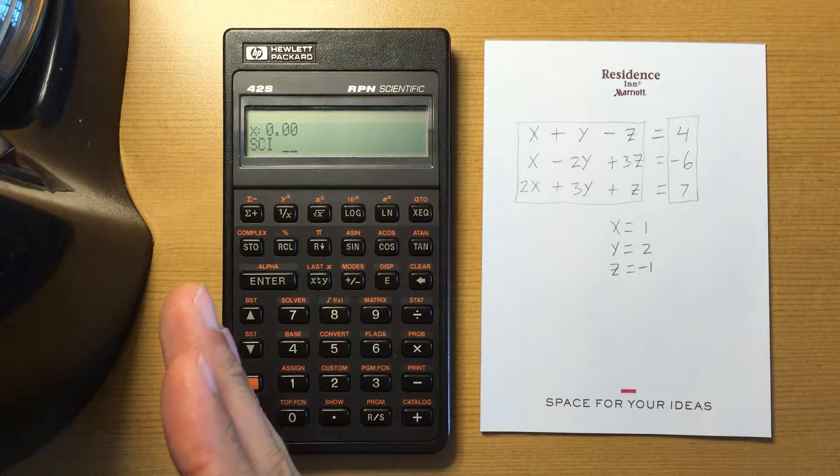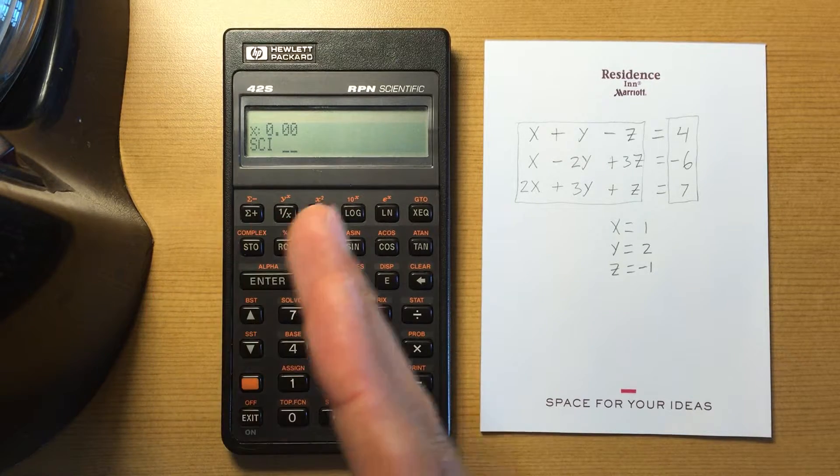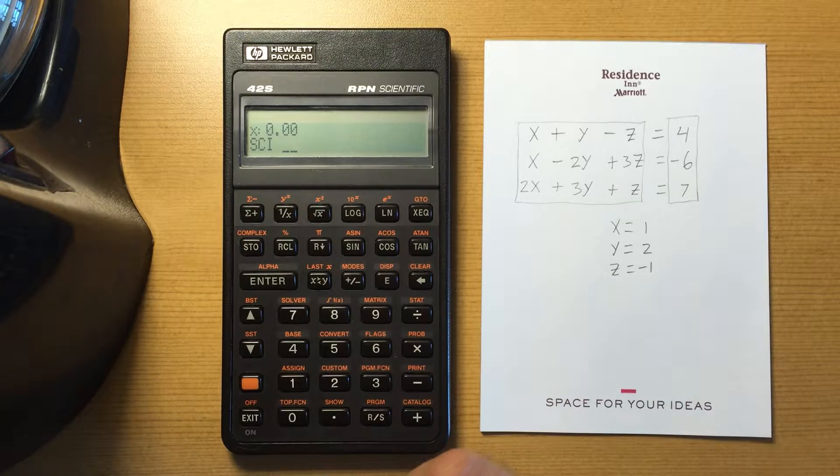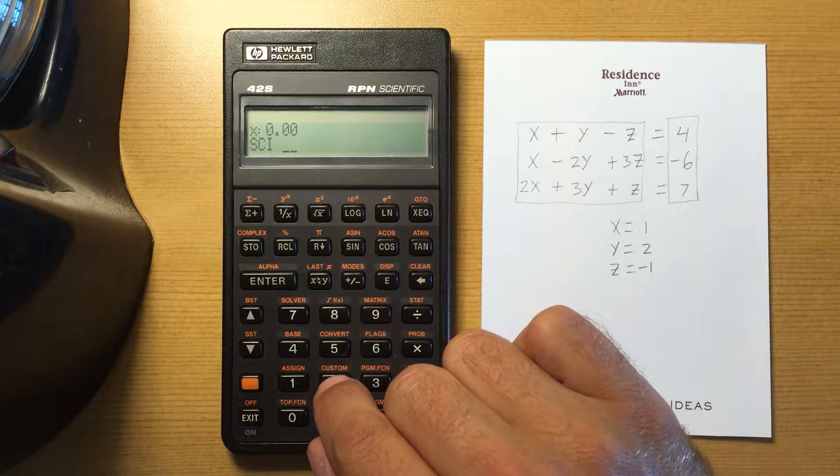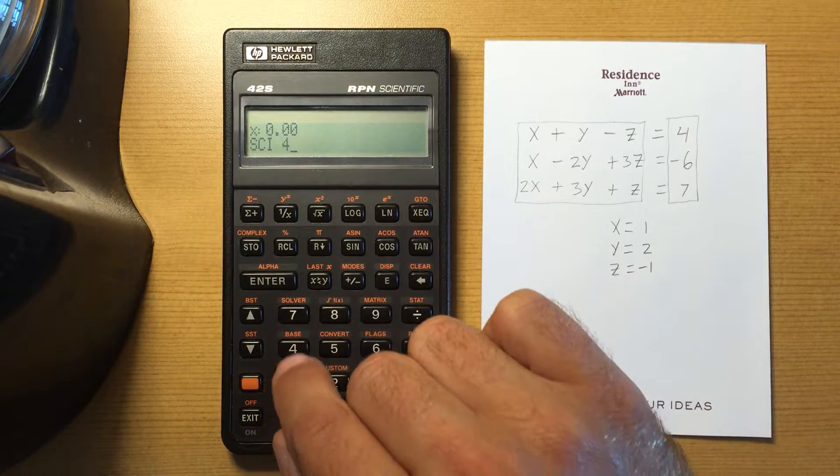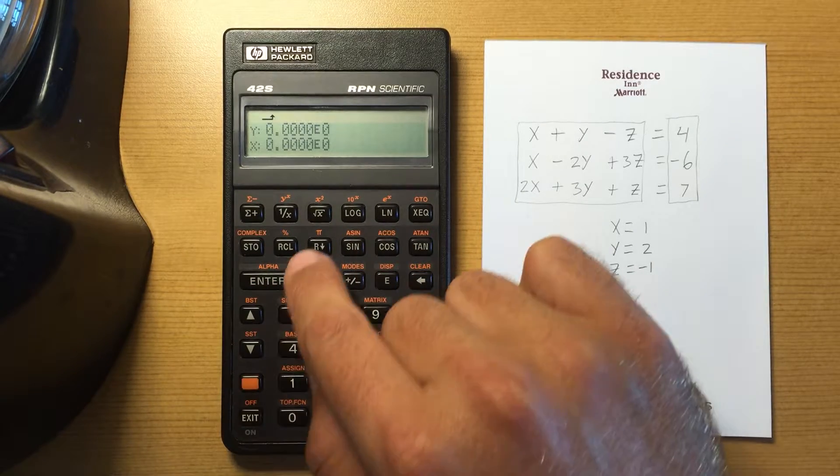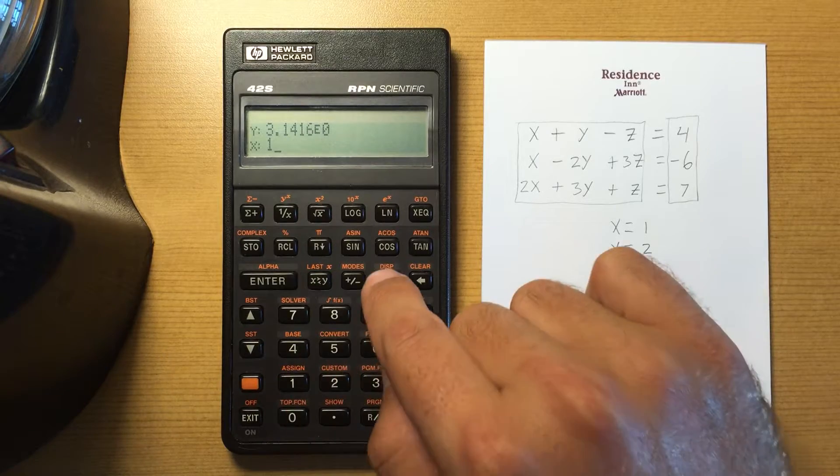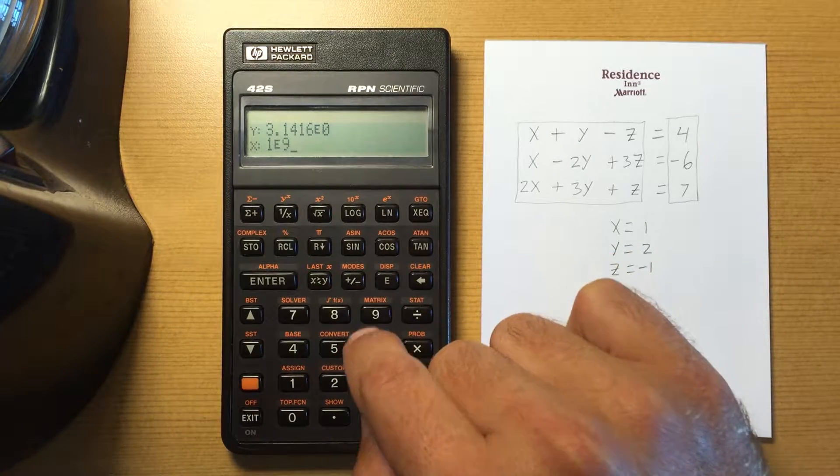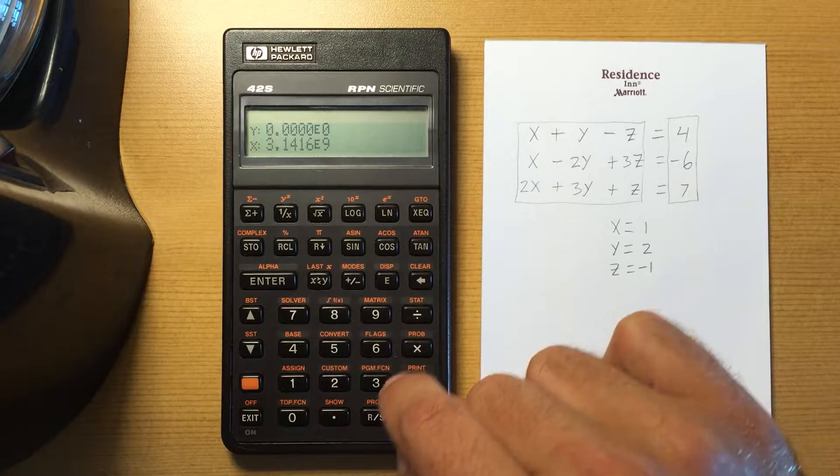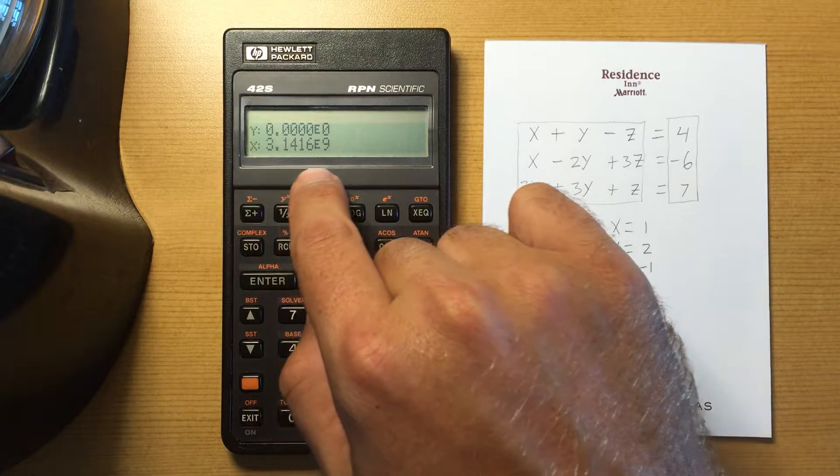So if I do say 4 here and then enter in pi, let's multiply that by 1e to the ninth, then it's going to show me one decimal place or one digit before the decimal place.